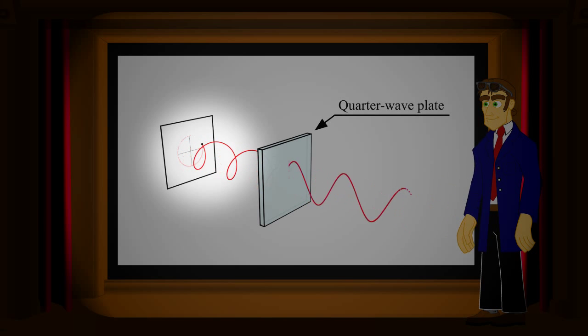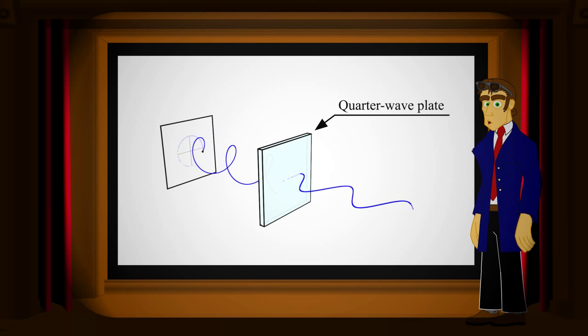To illustrate that, a right-handed circular polarization is used as an input. After going through the quarter wave plate, the light will be polarized linearly along the vertical axis, for example. Using the same setup, a left-handed circularly polarized light will also be transformed to linearly polarized light, but along the horizontal axis this time.